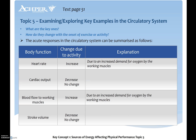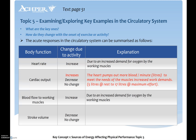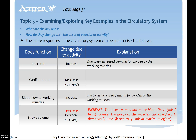We can also look at cardiac output. Heart rate changes, and blood flow to working muscles will obviously increase. Stroke volume won't see much change acutely, but with increased heart rate there will obviously be increased demands. Cardiac output increases as the heart pumps out more blood per minute to meet the needs of the muscles, and stroke volume would also increase slightly.